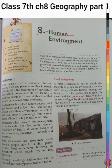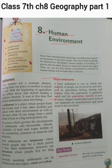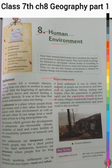Early humans used to live in the forest, but as time changed, they started making their settlements. Early humans led a nomadic lifestyle, moving from one place to another in search of food. With the beginning of agriculture, they settled down and started leading a sedentary lifestyle. It was at this time that the first settlement came into being.